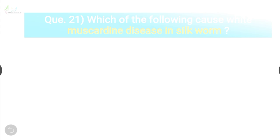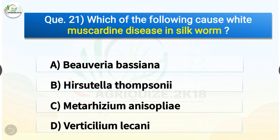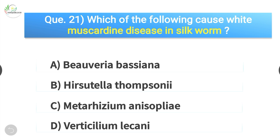Question number twenty-one: which of the following causes white muscardine disease in silkworm? Options are Beauveria bassiana, Hirsutella thompsonii, Metarhizium anisopliae, or Verticillium lecanii. The correct answer is option A, Beauveria bassiana. Beauveria bassiana causes white muscardine disease in silkworm.